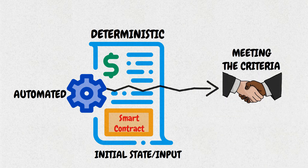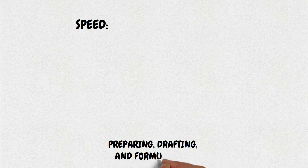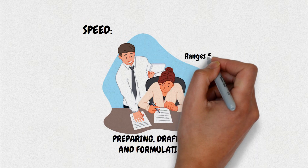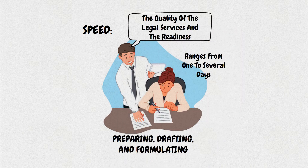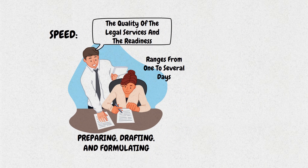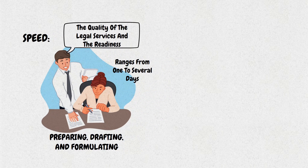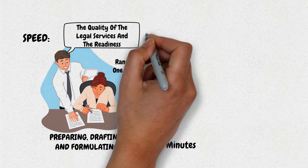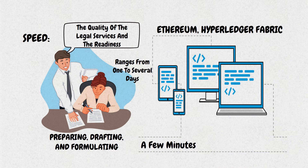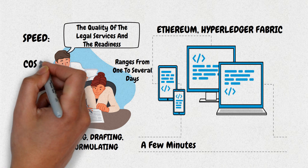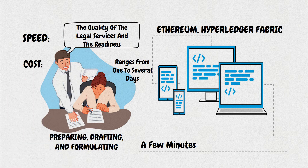Speed: the time needed for preparing, drafting, and formulating a traditional contract ranges from one to several days, depending on the quality of the legal services and the readiness of the parties. For smart contracts, this period can be reduced to a few minutes when adopting a ready-made contract platform, such as Ethereum, Hyperledger Fabric, and others.